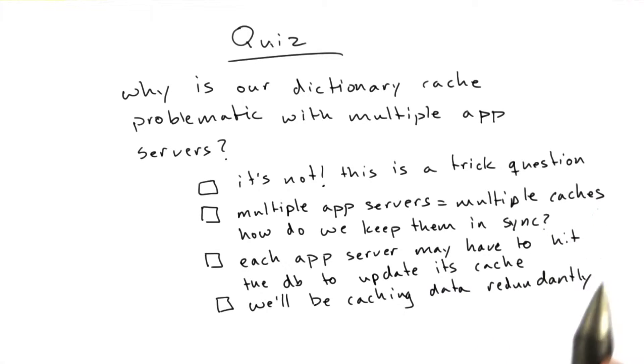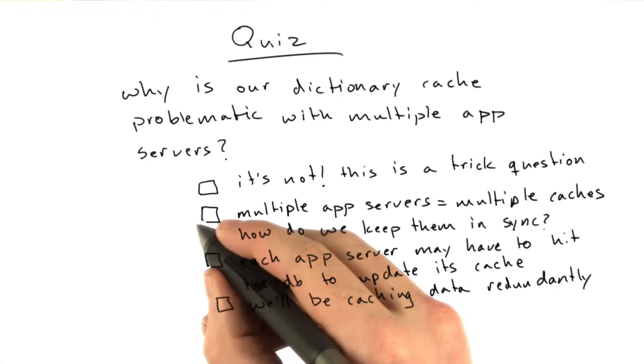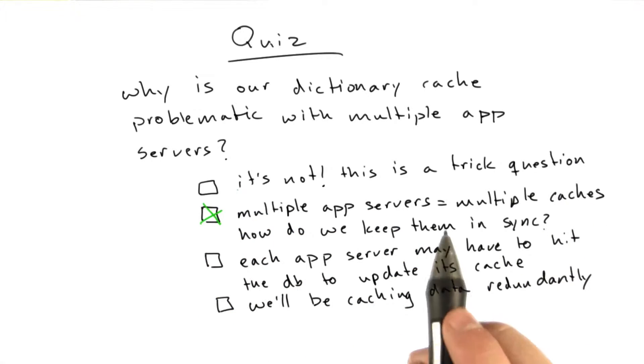Multiple app servers means multiple caches, and we have to keep them in sync. Yes, that is one source of problems we're going to face.